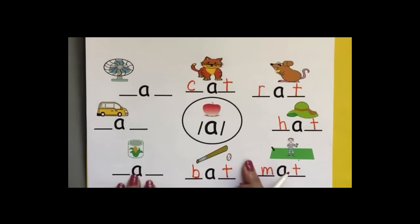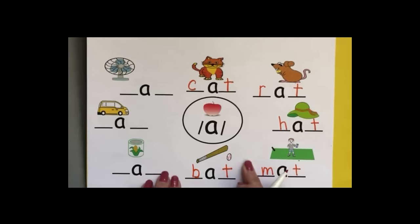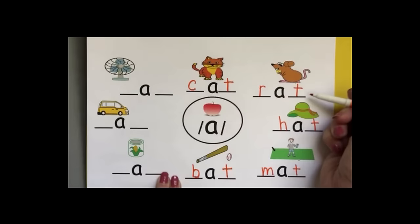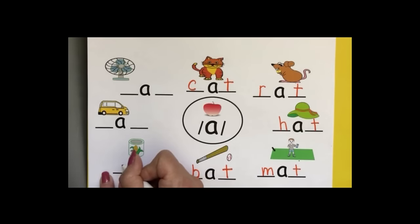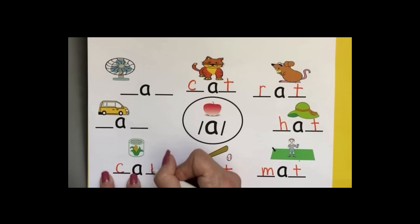Now the ending is going to change. We have all these words that end in a T, but this is a can. C, c, c, hard C, a, n, can.